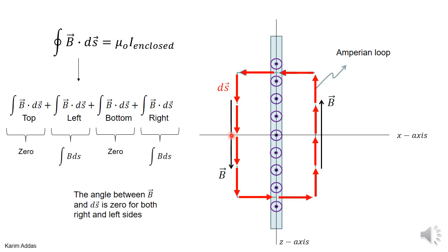Since B and dS are in the same direction on both the left and right sides, the dot product B·dS becomes B dS. From symmetry, the magnitude of B is the same everywhere along the right side, and the same everywhere along the left side, and the value on the right equals the value on the left — because the sheet is infinite and you don't get any closer or farther from its edge.